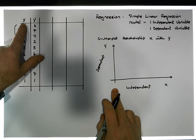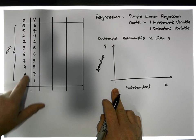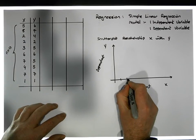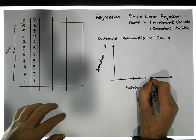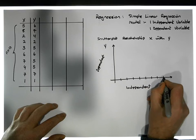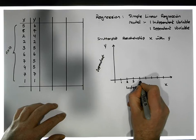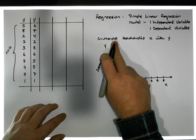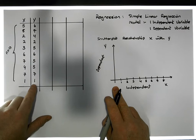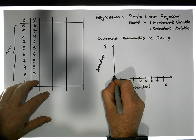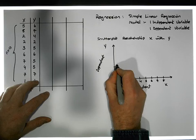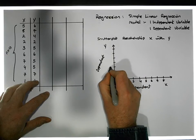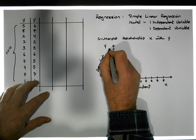We can see that the x values range from 1 up to 8, so I'll do some increments along here: 1, 2, 3, 4, 5, 6, 7, 8. And our dependent variable ranges from 1 up to 7, so I'll go up to 7 here: 1, 2, 3, 4, 5, 6, 7.